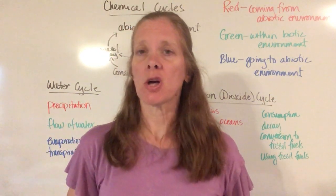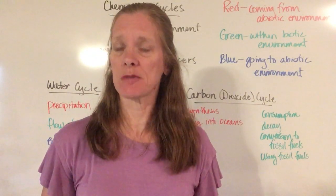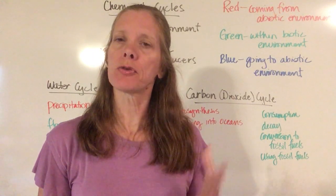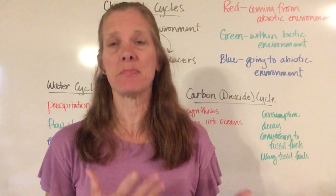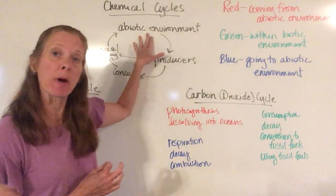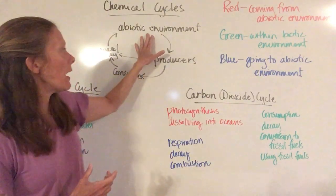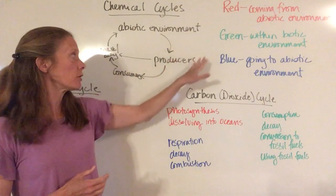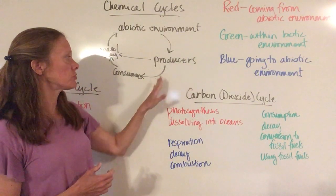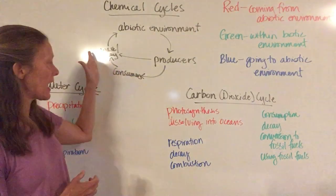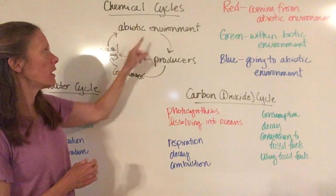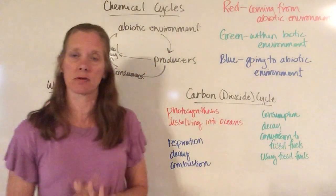Over the next several days we are going to be talking about five different chemical cycles that take place in our ecosystems to provide the nutrients and the gases that are necessary for life. There are basically three basic steps to each one: the substance has a place in the abiotic environment, then it gets transferred to the producers, then to consumers. Producers and consumers produce waste, die, decay, and those chemicals get transferred back into the abiotic environment again. This same cycle happens over and over in all five cycles we'll discuss.